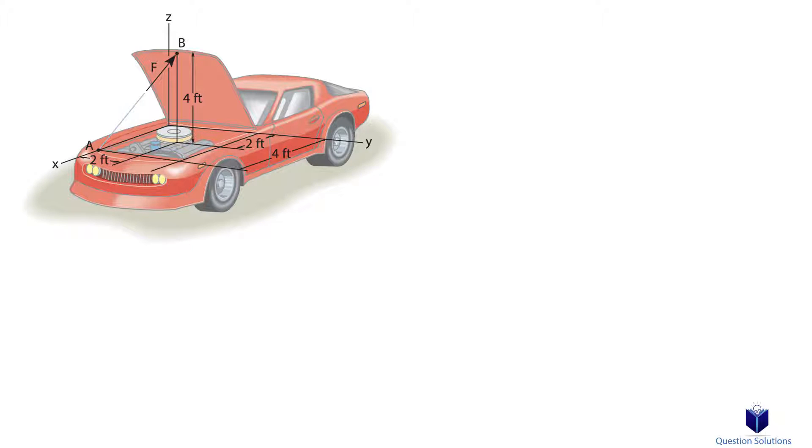To solve this problem, let's first write down the locations of each point in Cartesian form: first point A, next point B, and lastly the origin. Now we need to express the 24-pound force in Cartesian form.